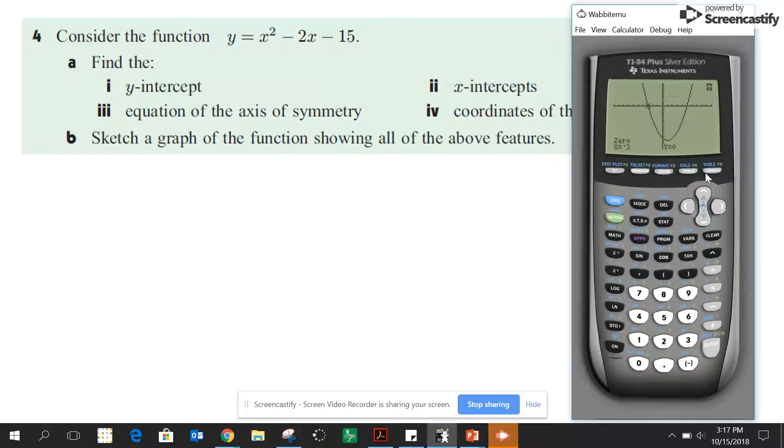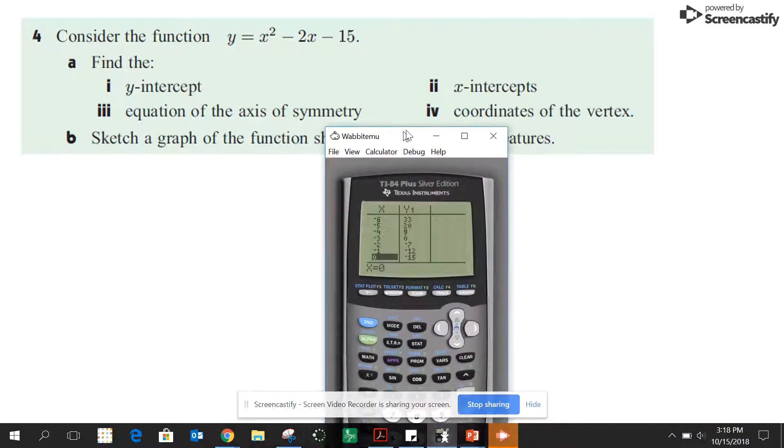Or you can calculate it again. The other place you might look is in your table. And depending on the way your table is set, you might be able to see that the x-intercept is when y is zero. You could also find the y-intercept when x is zero.